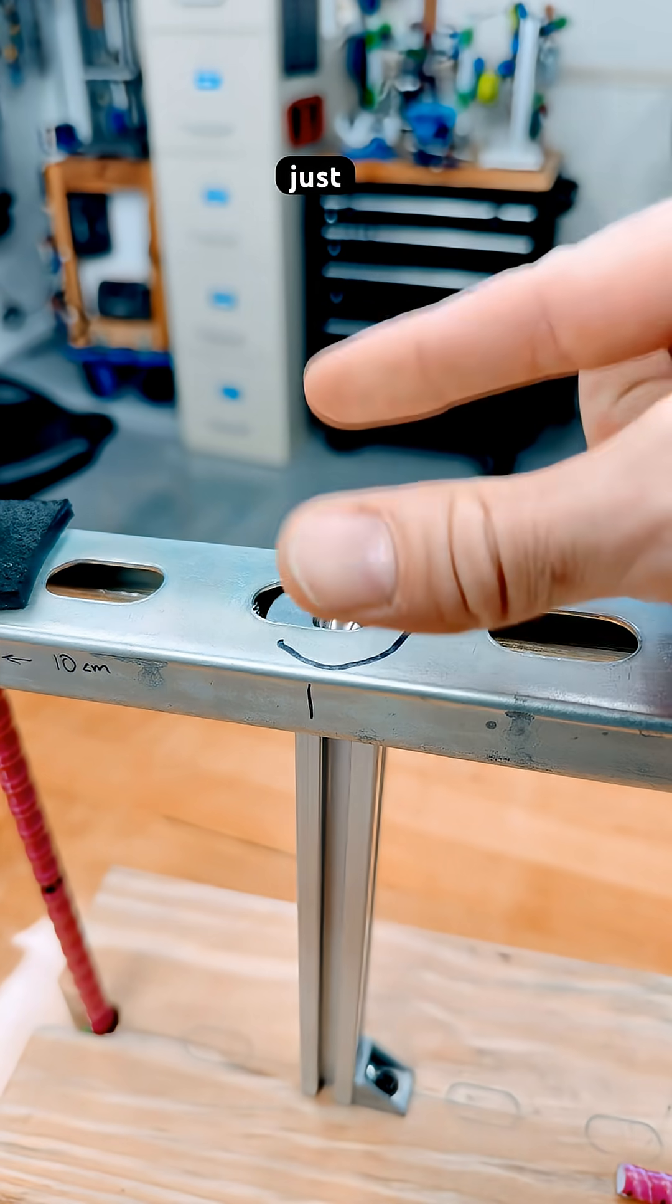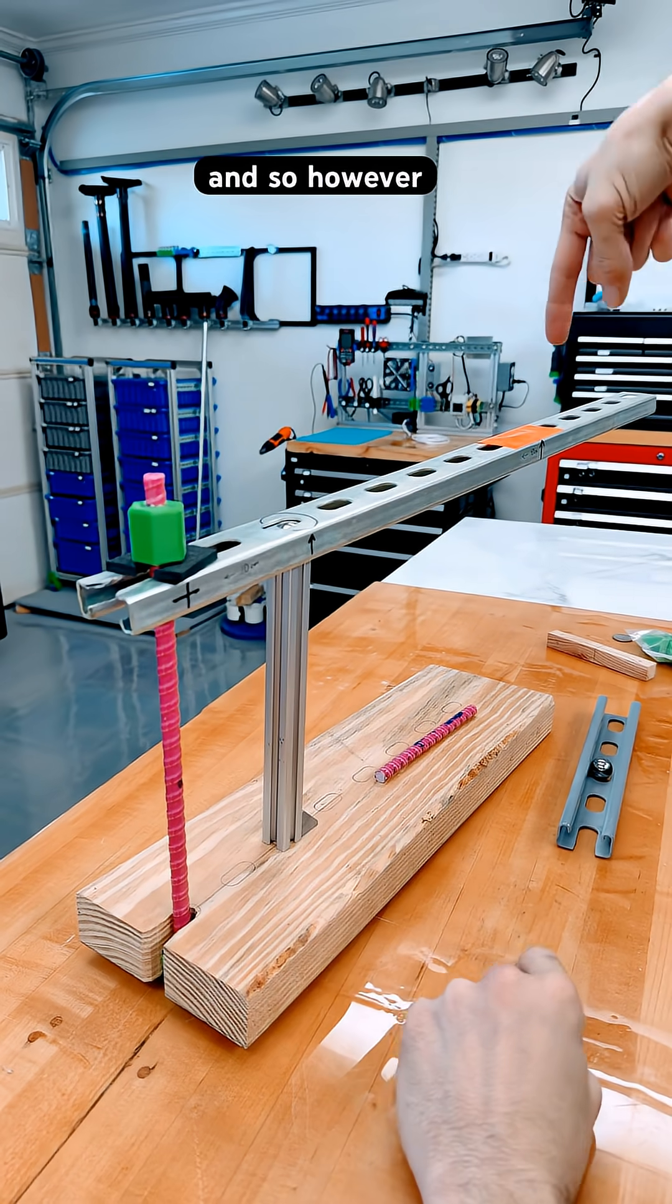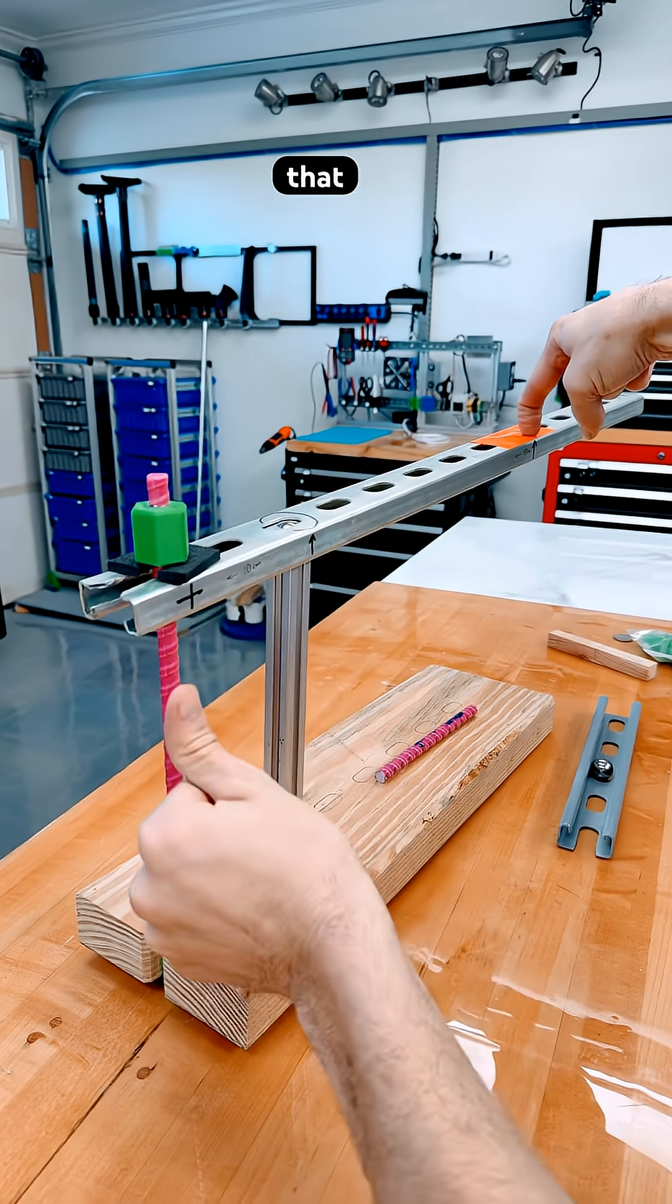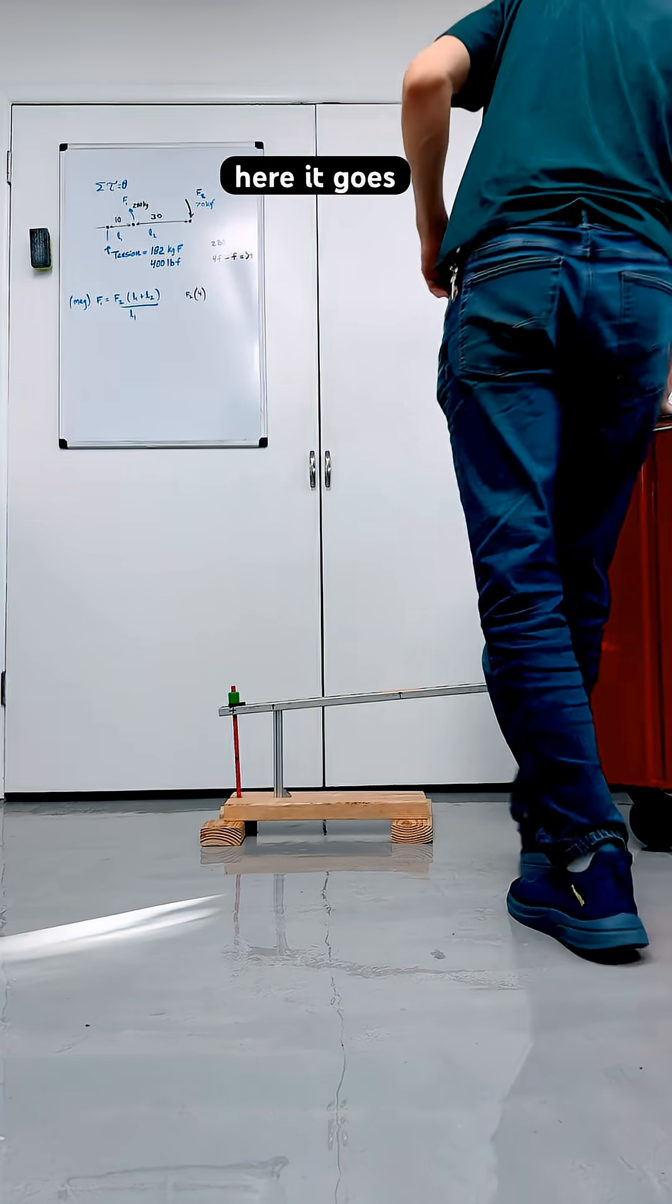This distance is 10 centimeters and this distance is 40 centimeters. So however much I push down here, it's going to be pushing up three times that on my green joint. Okay, here it goes.